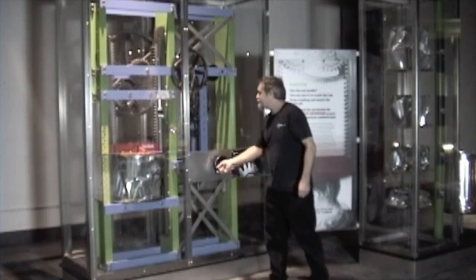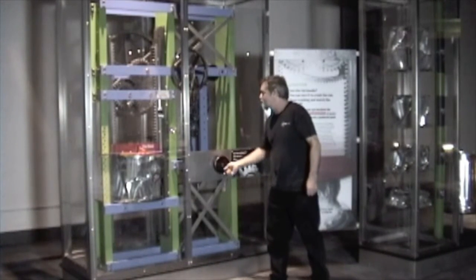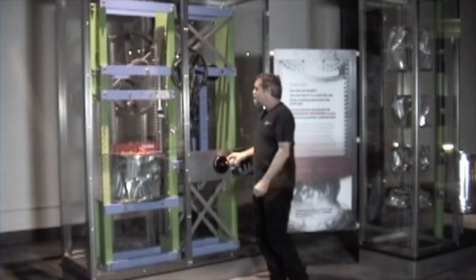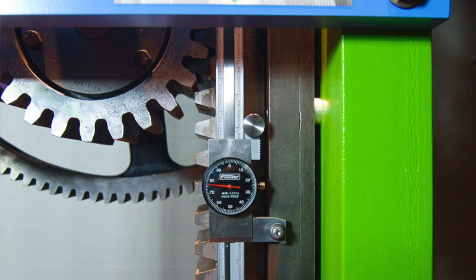So one of the features that we put into this exhibit is a dial indicator that's located right here. As I'm turning the crank, I can actually see the red needle on that dial indicator move, letting me know that the can's being crushed.